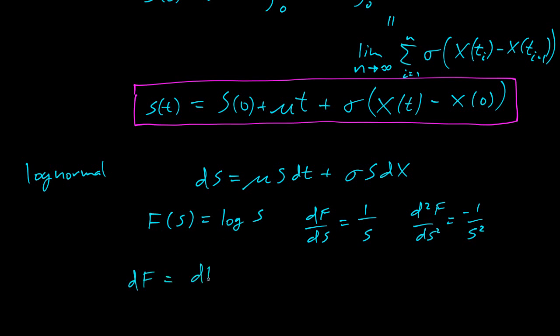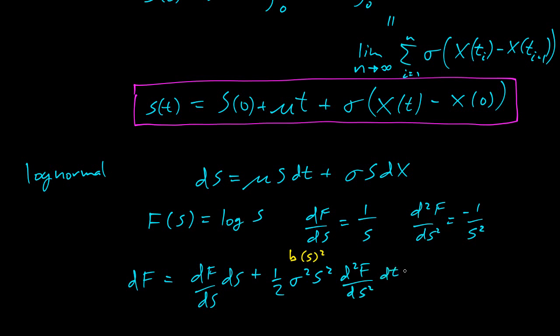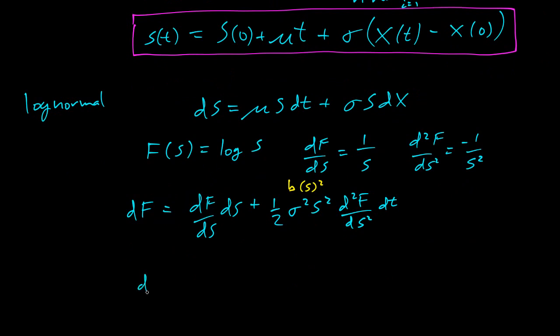What is df? df equals df/ds ds, plus a half, and now it was b, so I can write b(s)². That's σ²s². And then the final part is second derivative dt. So df/ds is 1/s. Then ds, we have a formula. Plus a half σ²s², second derivative negative 1/s², dt.